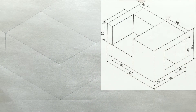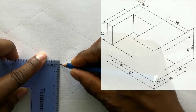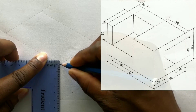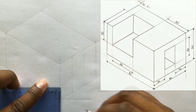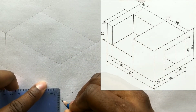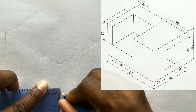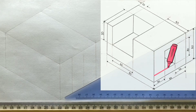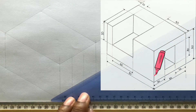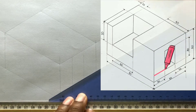Now measure and identify 10 millimeters on this line from this point and repeat the procedure at the other end of the line. Now use your set square along with your t-square and draw horizontal lines from these points.